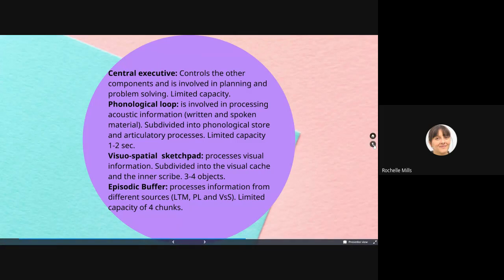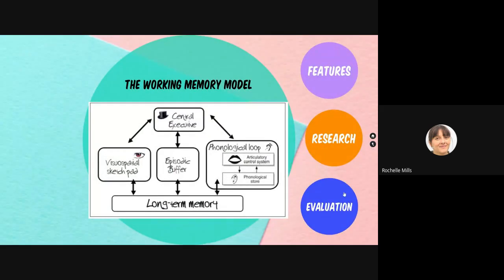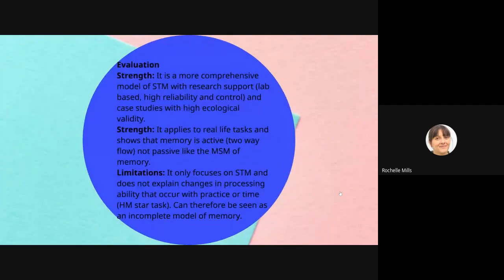Alongside the information about the different parts of the model, we've got research to support the model. In evaluation, a strength is that it's a more comprehensive model of short-term memory and it's got research support, such as Baddeley's study. This research support has high reliability and control because it's lab-based, but it also has research support from case studies, such as KF, which have higher ecological validity. So you've got a range of research from different sources, and this research supports the key features of the model — there's a phonological loop and a visuospatial sketchpad, one storing visual information and the other acoustic information.